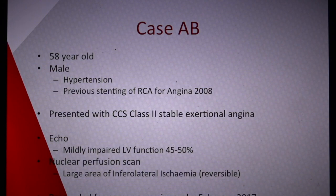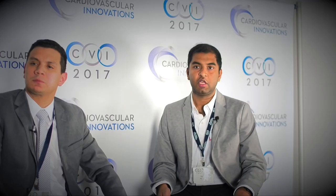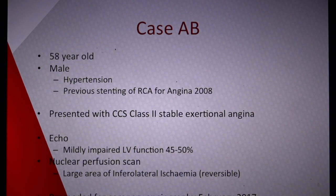This is a case of a 58-year-old gentleman with a background history of hypertension and previous stenting of the RCA for stable angina in 2008. He represented in 2017 with CCS class 3 stable exertional angina. Echocardiogram showed mildly impaired LV function with an ejection fraction of 45 to 50 percent, and a nuclear perfusion scan showed a large area of inferolateral ischemia which was reversible. His ECG showed a little bit of inferior changes but nothing too remarkable.